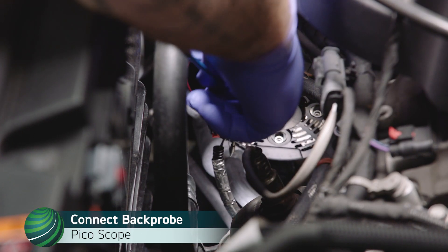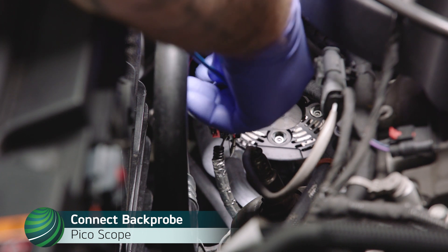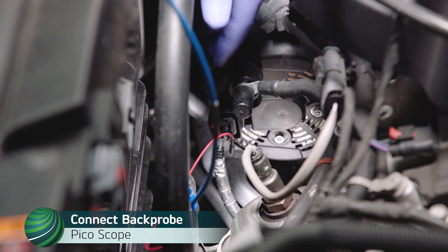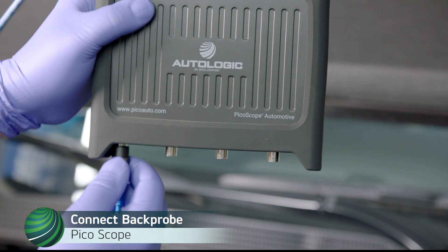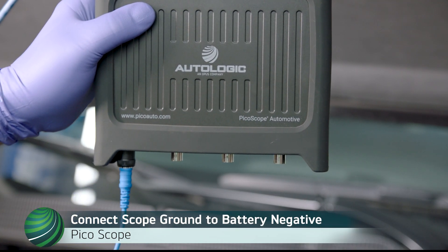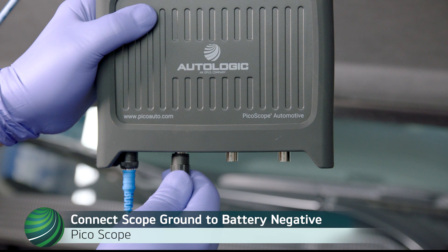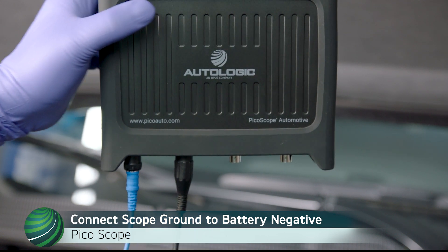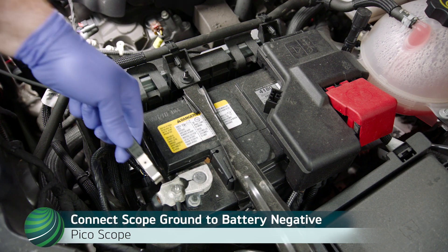Connect the back probe to a scope test lead. Connect the back probe test lead to channel 1 on your scope. Connect a high amp probe to channel 2 on your scope. Connect the scope ground to battery negative.